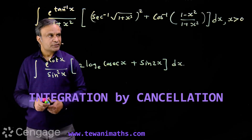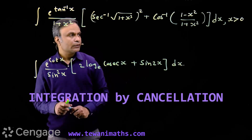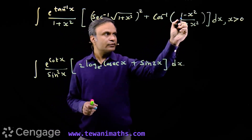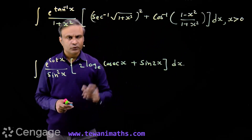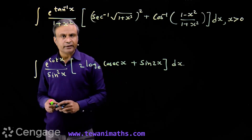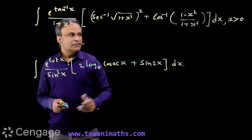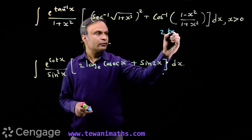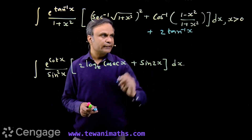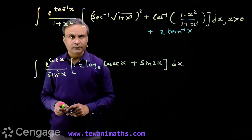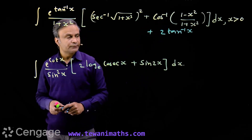Using formulas, we can simplify these two functions. What is cos-inverse of (1 minus x squared) over (1 plus x squared)? Which formula applies here? This is straightaway 2 tan-inverse x. You can check — ye 2 tan-inverse x hota hai.